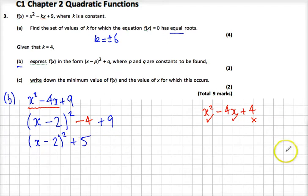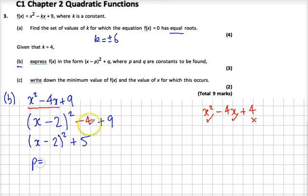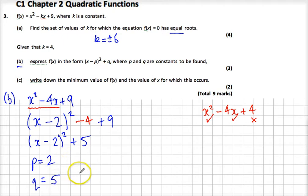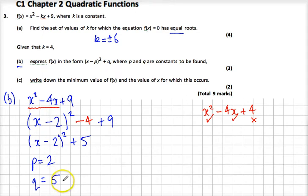If you don't trust me, you can expand that out and it will give you exactly what you started with at the top. It says where p and q are constants to be found — p must be 2 because we've got the subtractive expression in the bracket, and q must be 5. Three marks for this: 1 mark for getting the 2 right in the bracket, then 2 more marks for working out the numbers correctly and ending up with 5.